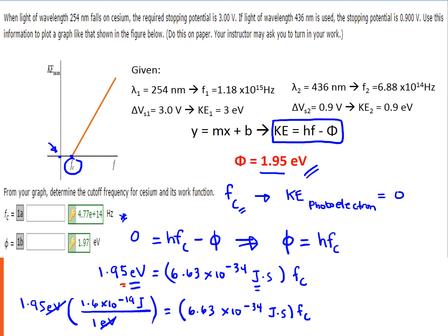Manipulating this equation leads us to the cutoff frequency FC equal to 4.71 times 10 to the power of 14 hertz. The slight discrepancy from the WebAssign answer is due to rounding during the process, but 4.71 times 10 to the power of 14 hertz is within the acceptable tolerance.